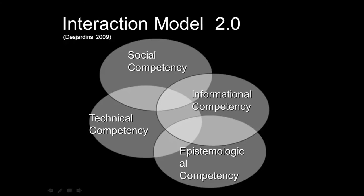Consequently, competencies required for each of these orders should be required to work in a proficient manner with technologies that have affordances of this nature. For example, semantic webs, otherwise known as content mapping technologies, such as open source tool CMAP, which can be found at cmap.ihmc.us, or the proprietary products Smart Ideas, which can be found at smarttech.com, and Inspiration, which can be found at inspiration.com.